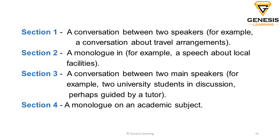There are four sections in the listening. The first section is going to be a conversation between two people. It can be about anything — say, travel, filling a form, filing a complaint, or anything of that sort. Then you've got section two, which is going to be a bit more difficult than the first one, and it's going to be a monologue — just one person talking. It can be somebody talking about some local facility, a lecture, or anything of that sort.